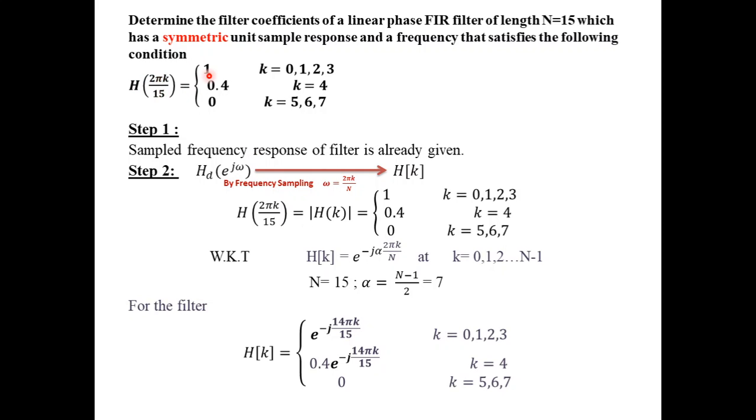equal to 1 for k equal to 0, 1, 2, 3, 0.4 for k equal to 4 and 0 for k equal to 5, 6, 7.